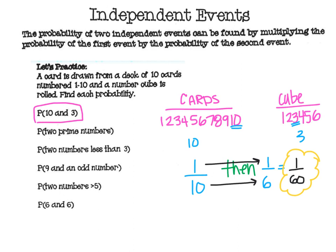The denominator was six because there were six numbers on the number cube, and ten because there are ten different cards.